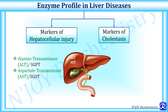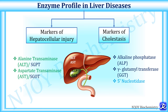The markers of cholestasis — where there is obstruction to bile flow causing stasis of bile — are alkaline phosphatase, gamma-glutamyl transferase, and 5'-nucleotidase. These constitute the liver enzyme panel included in the liver function test.